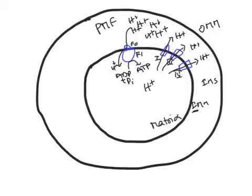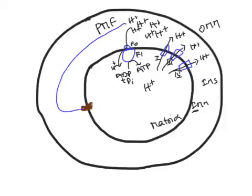Now, what if you create a pore in the inner mitochondrial membrane? I am going to insert a pore in the inner mitochondrial membrane. When a pore is created in the inner mitochondrial membrane, protons start to flow from the intermembrane space through this pore back into the matrix. Instead of coming through ATP synthase — which is the normal route — they now have an alternate route through this pore. The energy present in those protons will simply be released as heat.